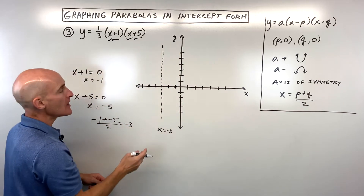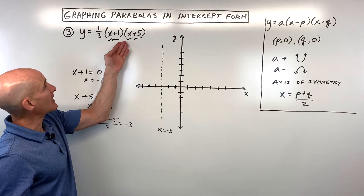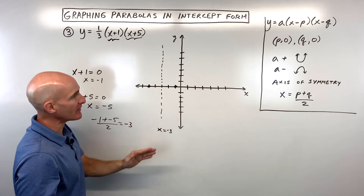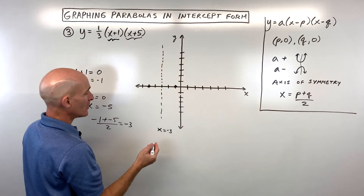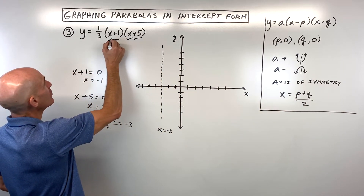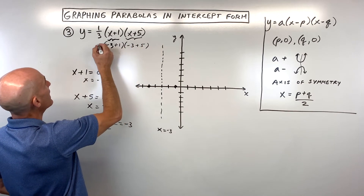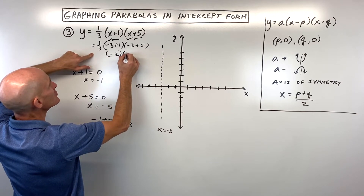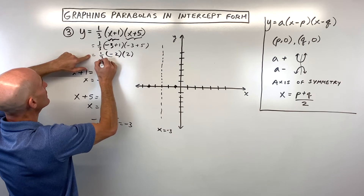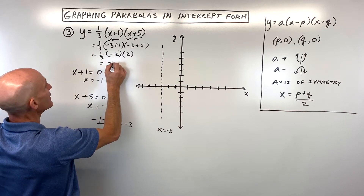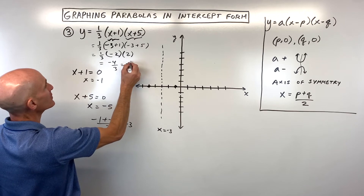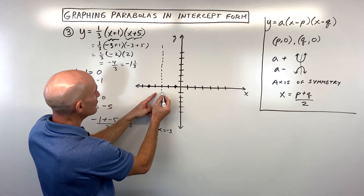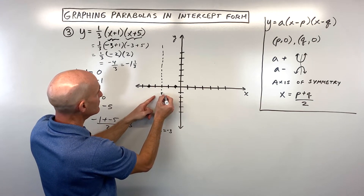Remember, x equals lines are vertical lines. Taking negative three and plugging it back in for x — since the vertex always lies on the axis of symmetry — we get: negative three plus one is negative two, negative three plus five is two, times one-third. That gives negative four times one-third, which is negative four-thirds, or negative one and one-third. So the vertex is at (-3, -4/3).